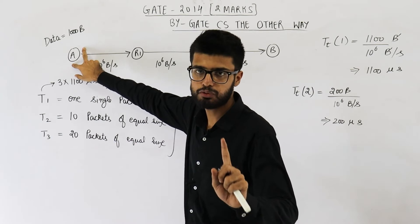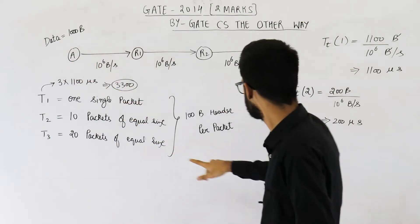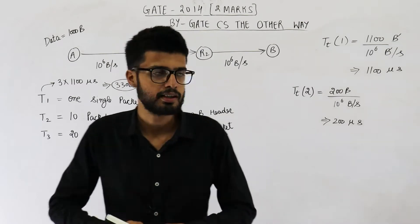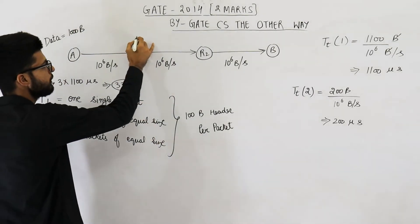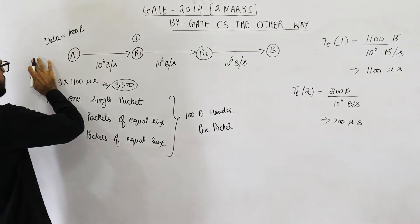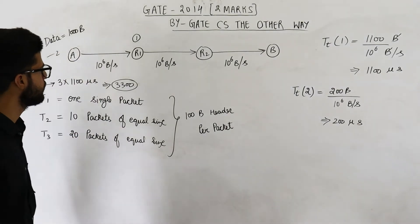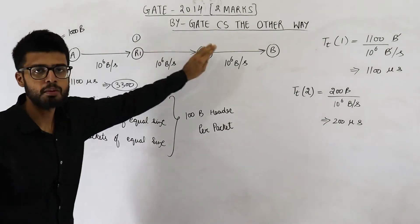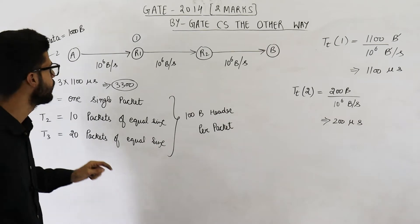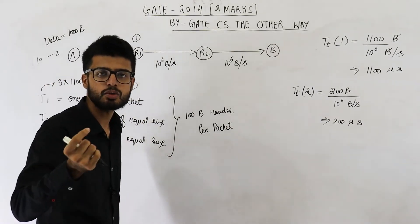We have 10 packets total. Packet number 1 will be transmitted by the source in 200 microseconds completely. Then the router R1 will start transmitting packet number 1, and at the same time the source transmits packet number 2. Both parties are working in parallel — this is called pipelining. Earlier, one entire file was transmitted at one node before moving to the next, but now both parties work simultaneously.